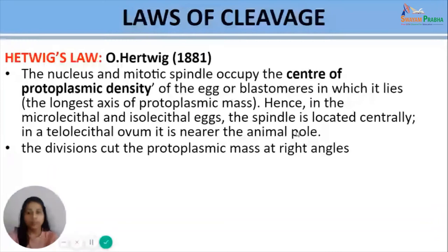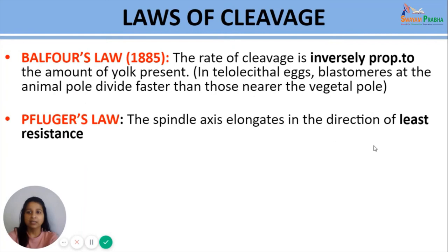The third law was stated by Balfour, which states that the rate of cleavage is inversely proportional to the amount of yolk present. Because of this, in telolecithal eggs, blastomeres at the animal pole — where yolk is present in lesser quantity — divide faster compared to blastomeres near the vegetal pole, which are heavily laden with yolk. The fourth law was given by Fludger, which states that the spindle axis elongates in the direction of least resistance.